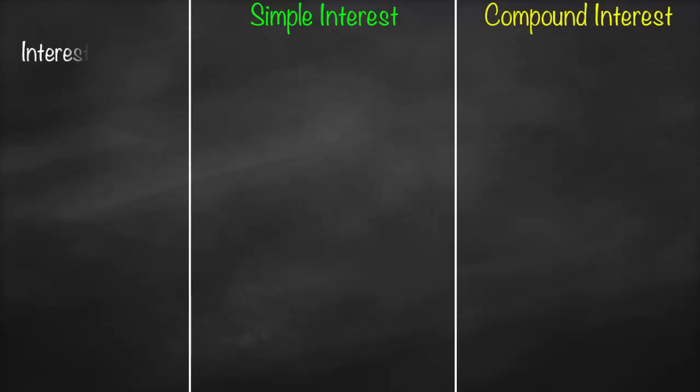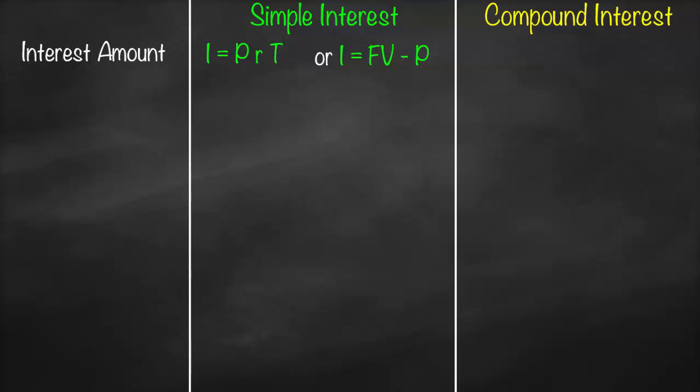Regarding the formulas of simple interest and compound interest, the interest amount for simple interest is equal to principal times simple interest rate times time, or future value minus principal. For compound interest we don't have a direct formula — we just need to get future value minus principal.